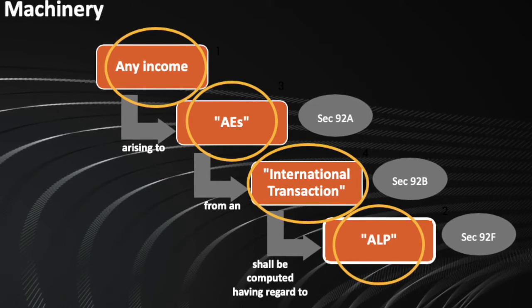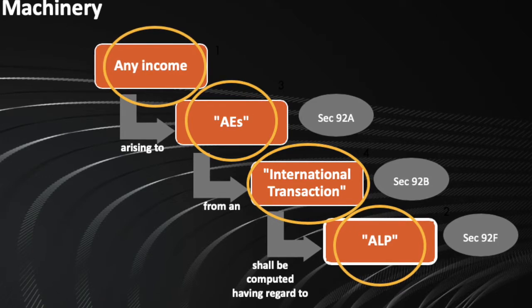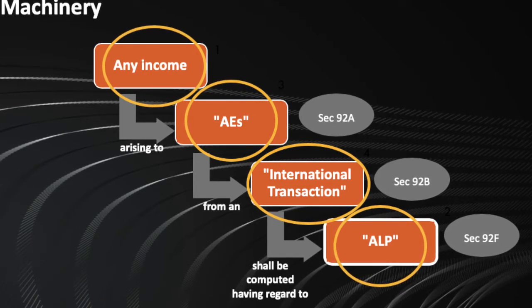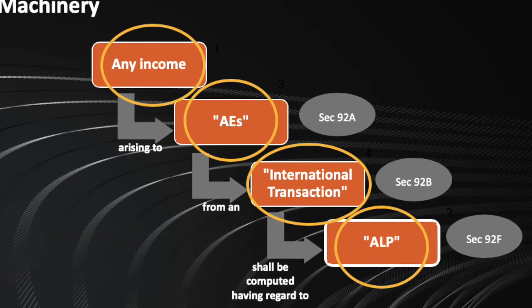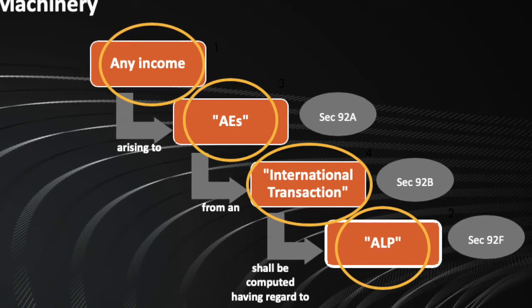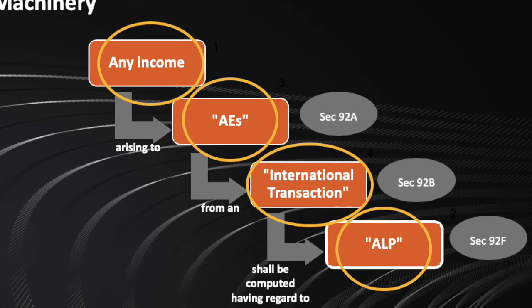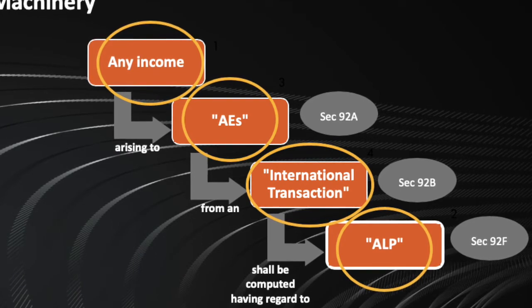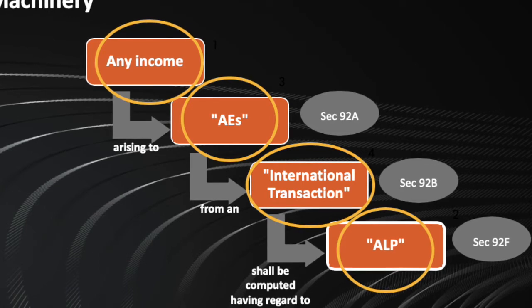Here now we are going to look at four important terminologies: income, associated enterprises, international transaction, and arm's length price. Income as is generally understood is any income on which tax needs to be payable. A simplified definition could be any type of income that is defined under section 2 subsection 24 of the Indian income tax law.